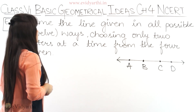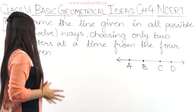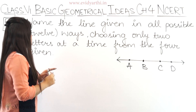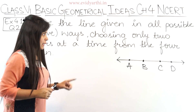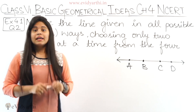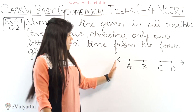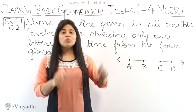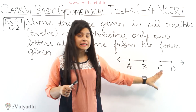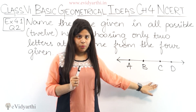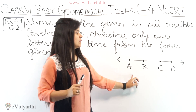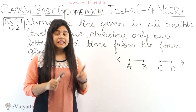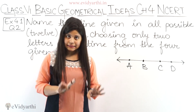In this question we have: name the line given in all possible — in brackets, 12 ways — choosing only 2 letters at a time from the 4 given. What we have to do is name a line from all possible 12 means there are 12 lines all possible, like A to B, B to C, A to C, and so on. We have these lines using only 2 points at a time.